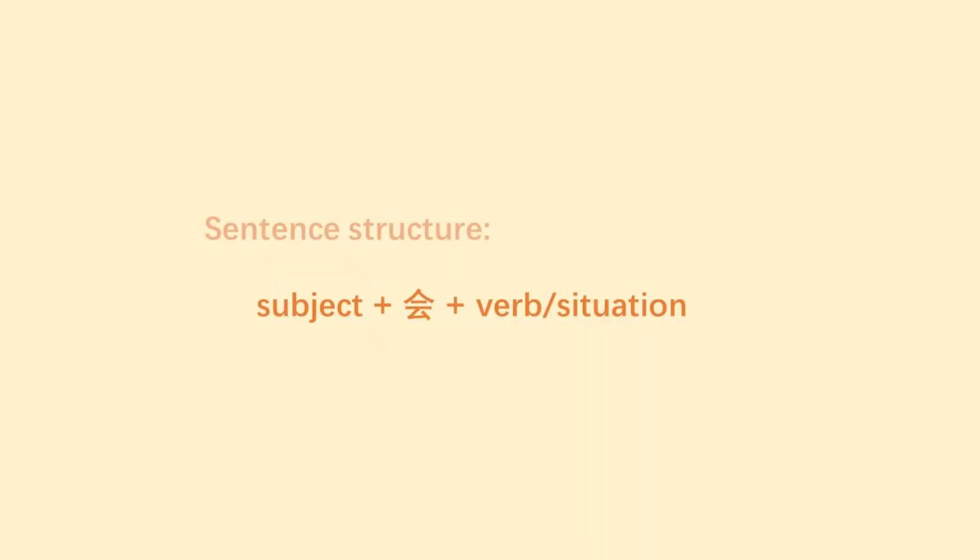When 会 describes future happenings, it mainly suggests that something will or might take place, but is not certain. For this meaning, 会 can be translated as 'might' or 'will' in the context of uncertainty. The sentence structure is: subject plus 会 plus verb or situation. Let's see some examples.